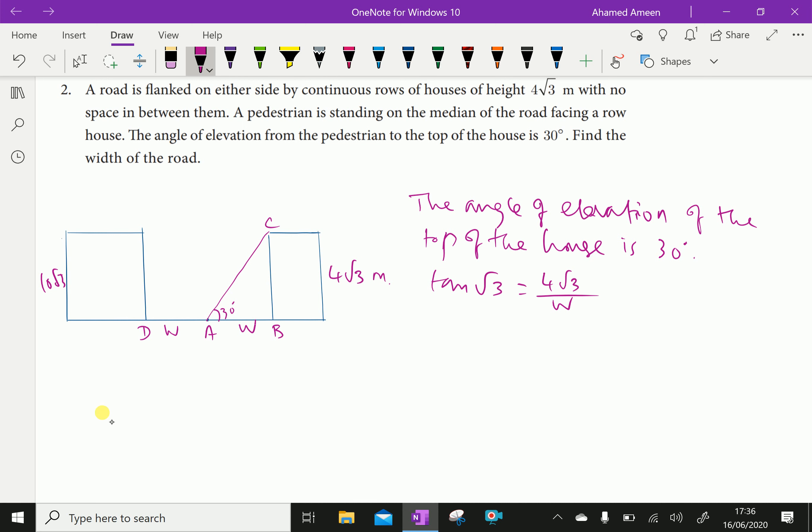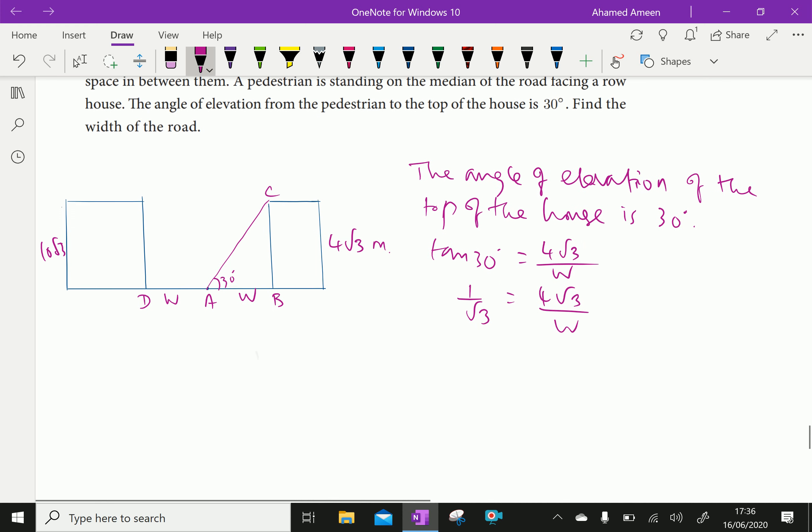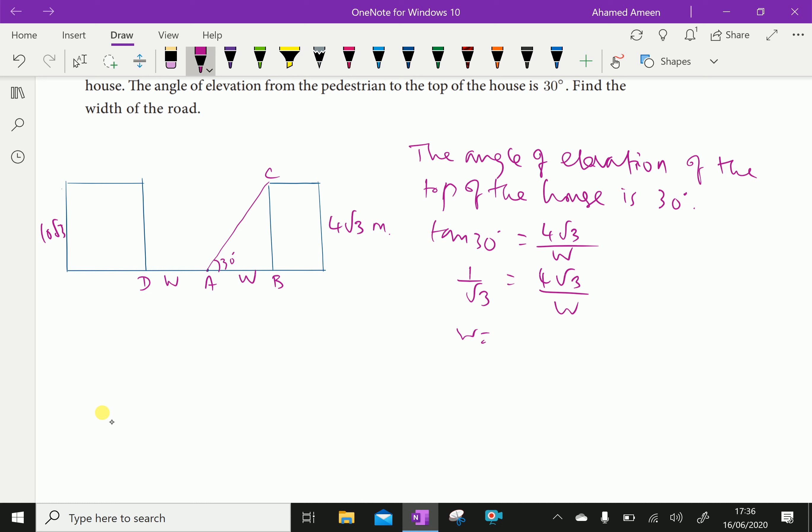Tan 30 is 1 over root 3. Now by cross multiplying we get W equal 4 root 3 into root 3, therefore W equal 12 meter.